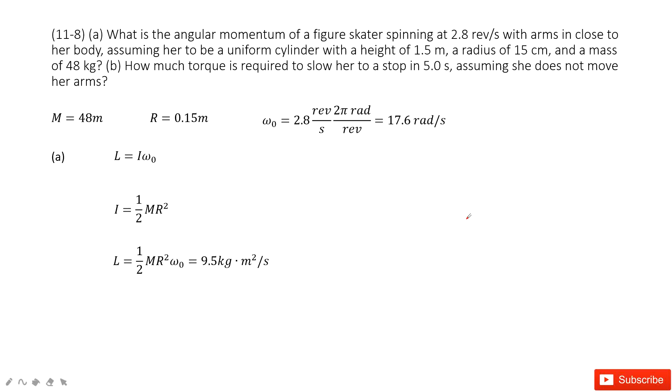In this one, we can see for this system, for this person, we know its mass, the radius, for the uniform cylinder, right? We consider her as a uniform cylinder, and then the angular velocity is given. We convert the unit revolution per second to radians per second.